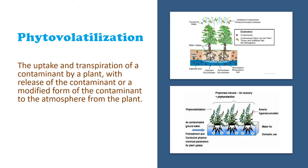Phytovolatilization is the uptake and transpiration of contaminants by plants, with release of the contaminant or a modified form into the atmosphere from the soil. Plant roots absorb pollutants and transpire them in volatile form — converting non-volatile metals or organic minerals into volatile compounds by changing their chemistry or oxidation states. This makes the soil less toxic, and contaminants are not stored in the plant biomass.